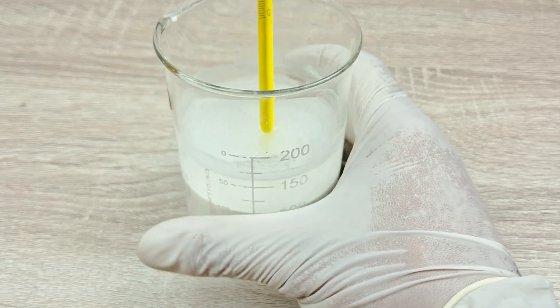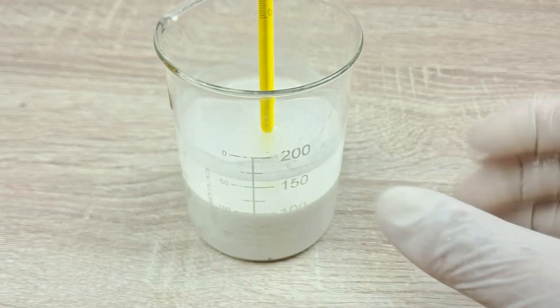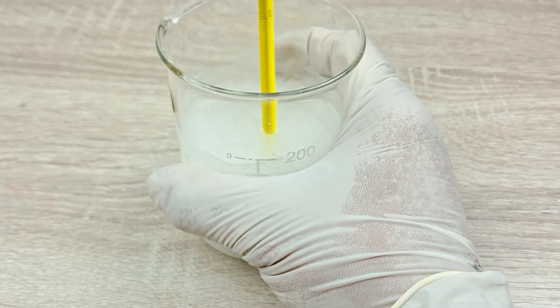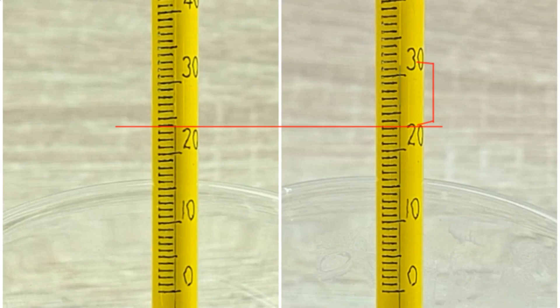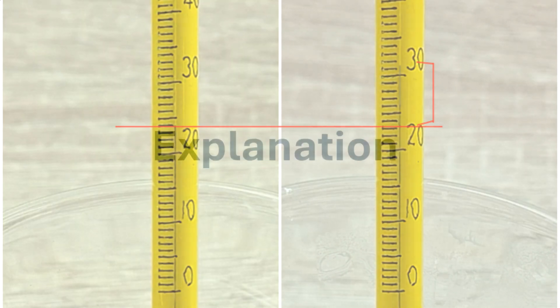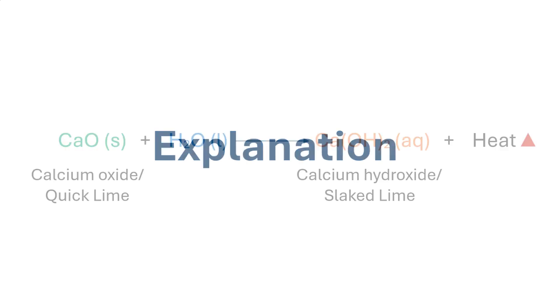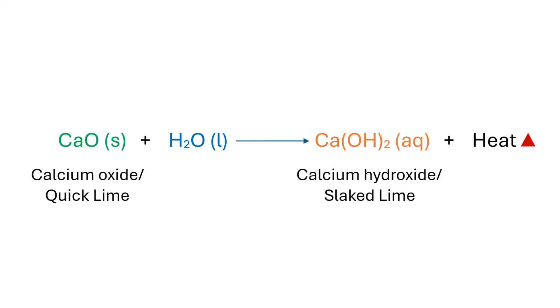You can also touch the side of the beaker with the palm of your hands. When quicklime is added to the water, an exothermic combination reaction occurs, resulting in the production of heat, which is reflected by an increase in the reading of the thermometer. You can also feel the increase in temperature in the form of a slight warmth when the beaker is touched with your hands. The combination reaction that occurs can be summarized in the form of a chemical equation as shown here.